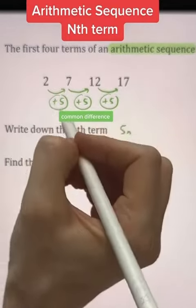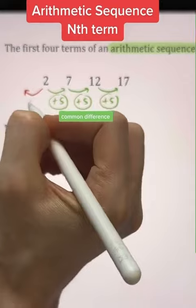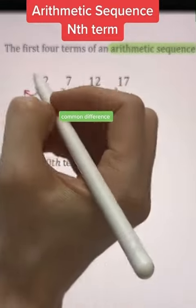Then we always work backwards, i.e., the opposite of add 5 is to subtract 5. And 2 subtract 5 gives us negative 3.